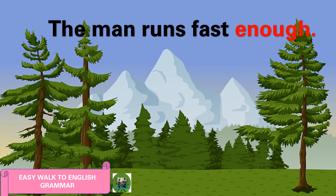The man runs fast enough. In this sentence we are dealing with the adverb of degree 'enough.' The adverb of degree 'enough' modifies the adverb of manner 'fast,' but contrary to the previous examples, we placed the adverb of degree 'enough' after the word it modifies. In previous examples the adverb of degree was placed before the words they modify, but 'enough' is placed after the word it modifies.